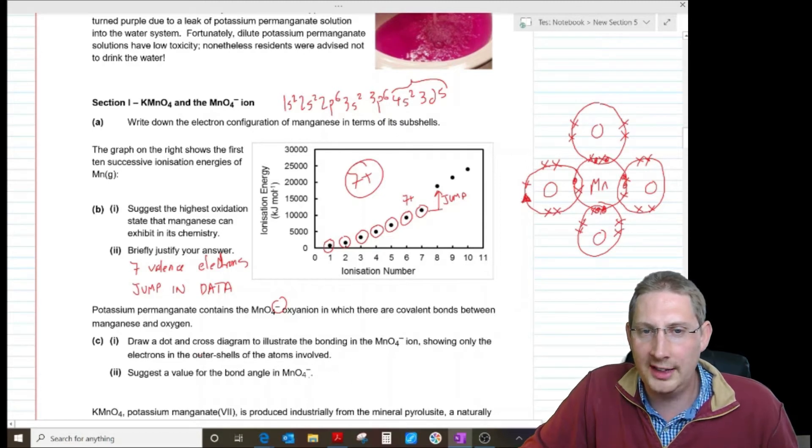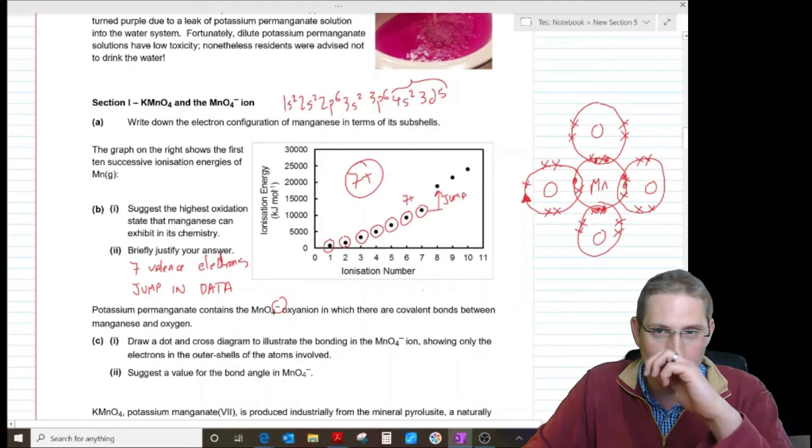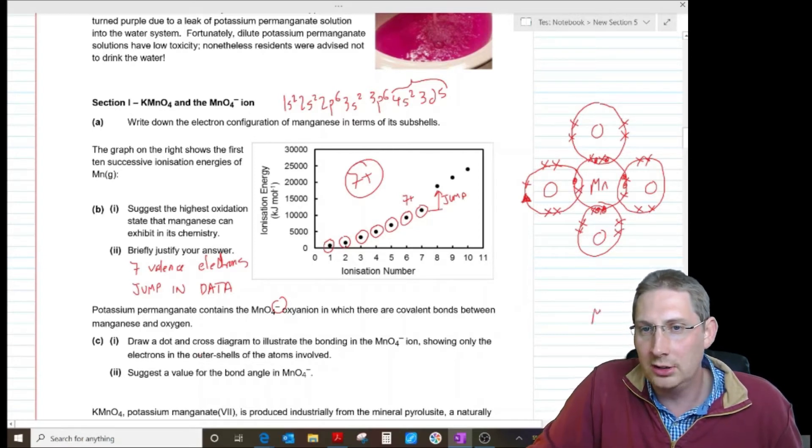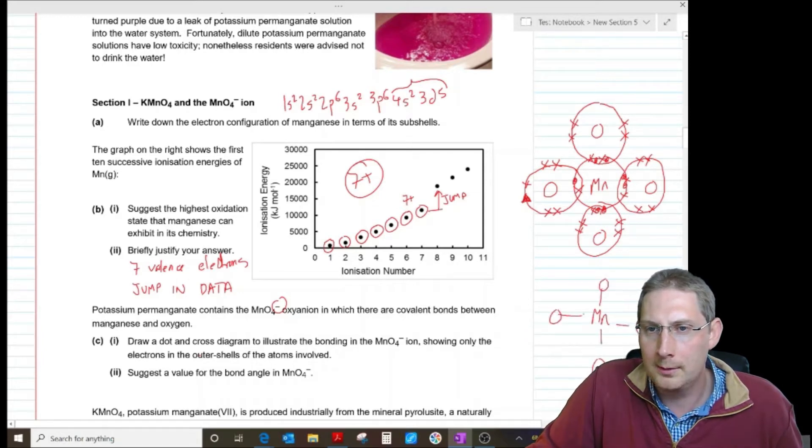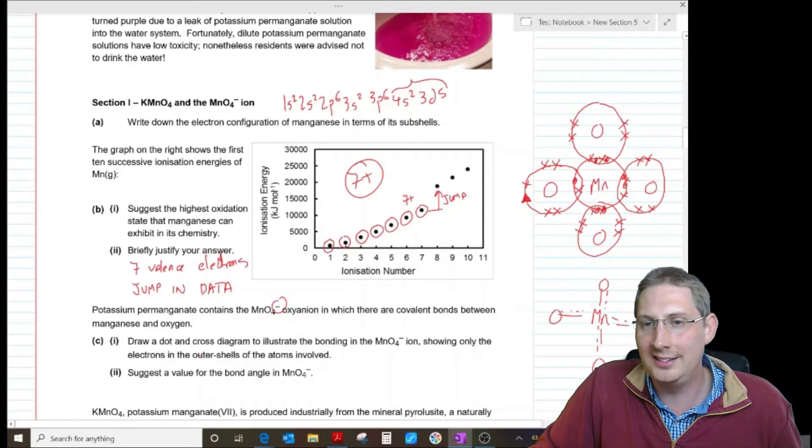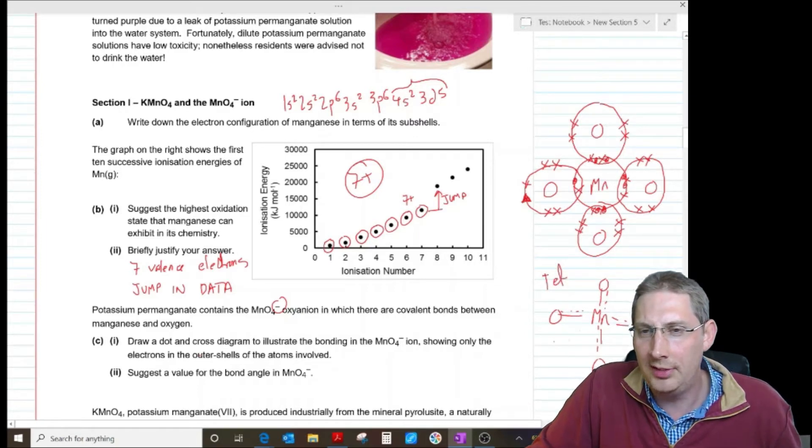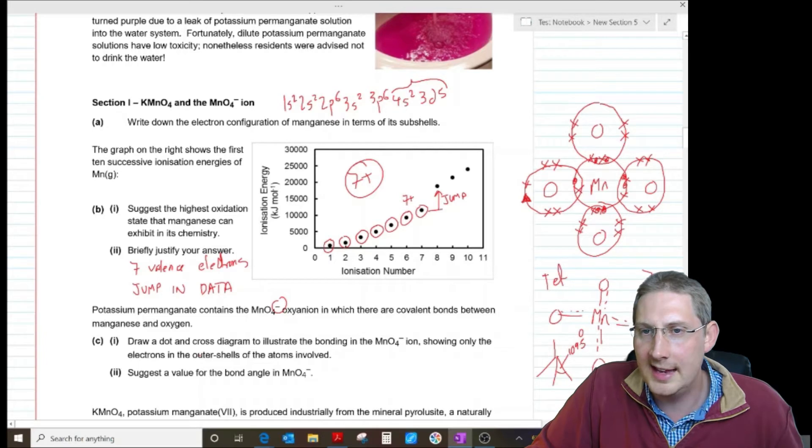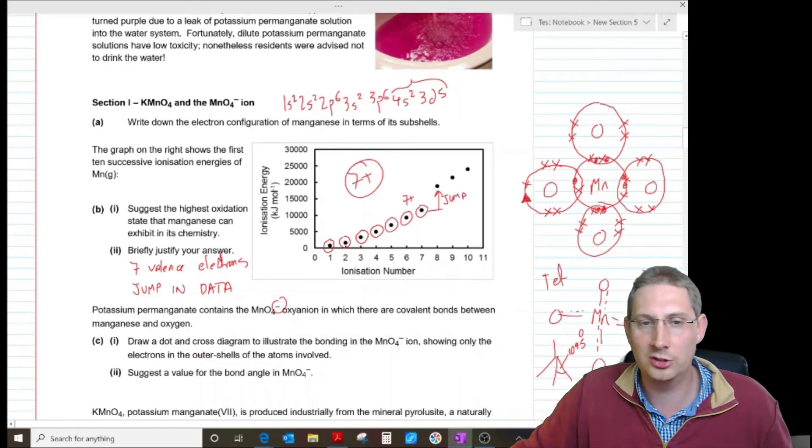Suggest a value for the bond angle. Actually, because all of these are drawn completely the same and the real structure would be sort of between one and two bonds between each oxygen, it's actually got four identical groups about the manganese. So it's going to be tetrahedral and the bond angles are going to be 109.5 degrees there because it's based on the tetrahedral anion. The whole thing there is negative. It's actually spread out over all four oxygens.